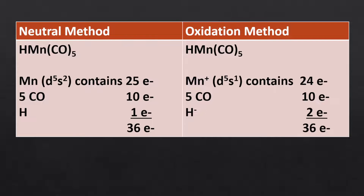Using the ionic method: the oxidation state of manganese is +1, contributing 24 electrons from the manganese ion, 10 electrons from 5 carbonyl ligands, and 2 electrons from the hydride ion. Consequently, the effective atomic number is 36. Both methods give the same result, but the neutral method is more convenient.